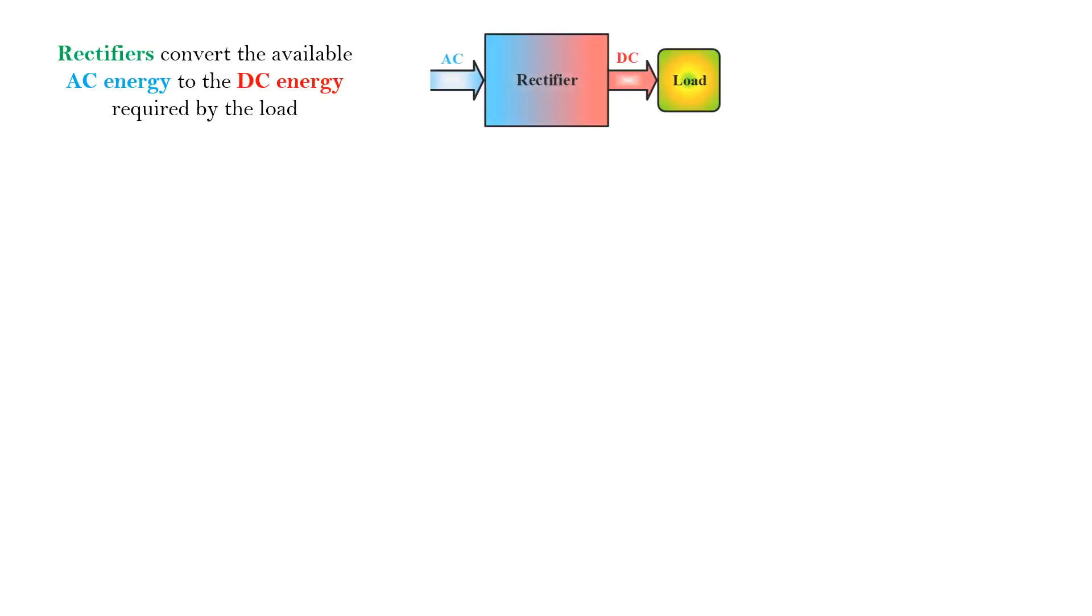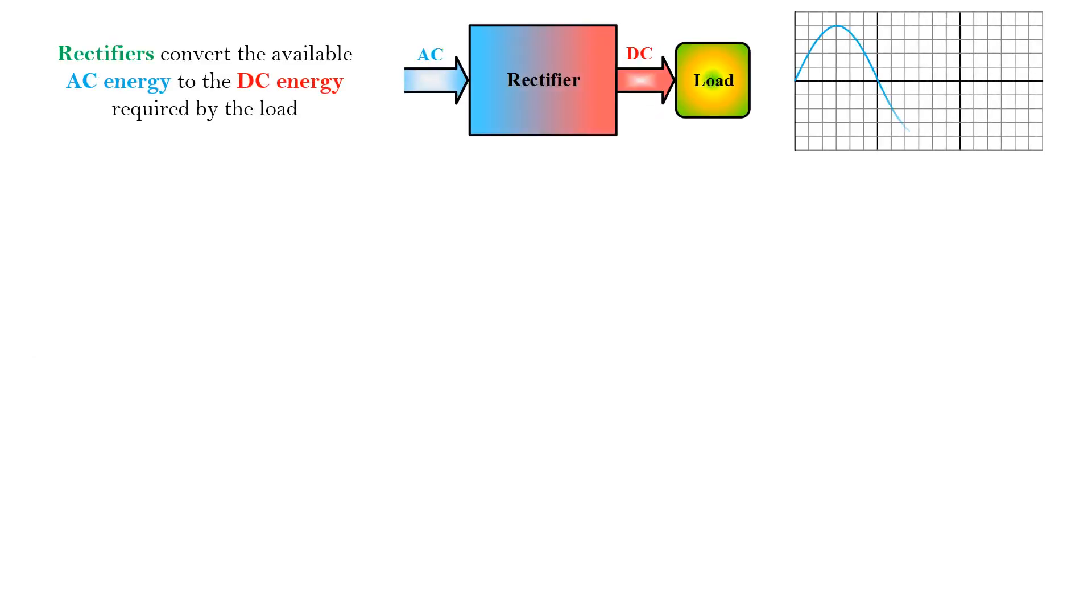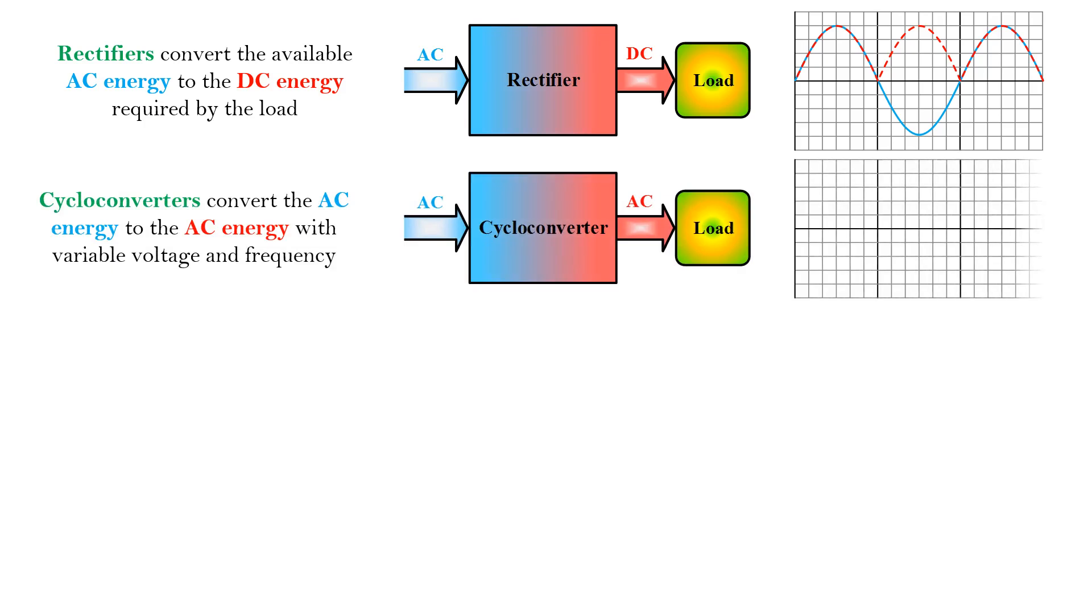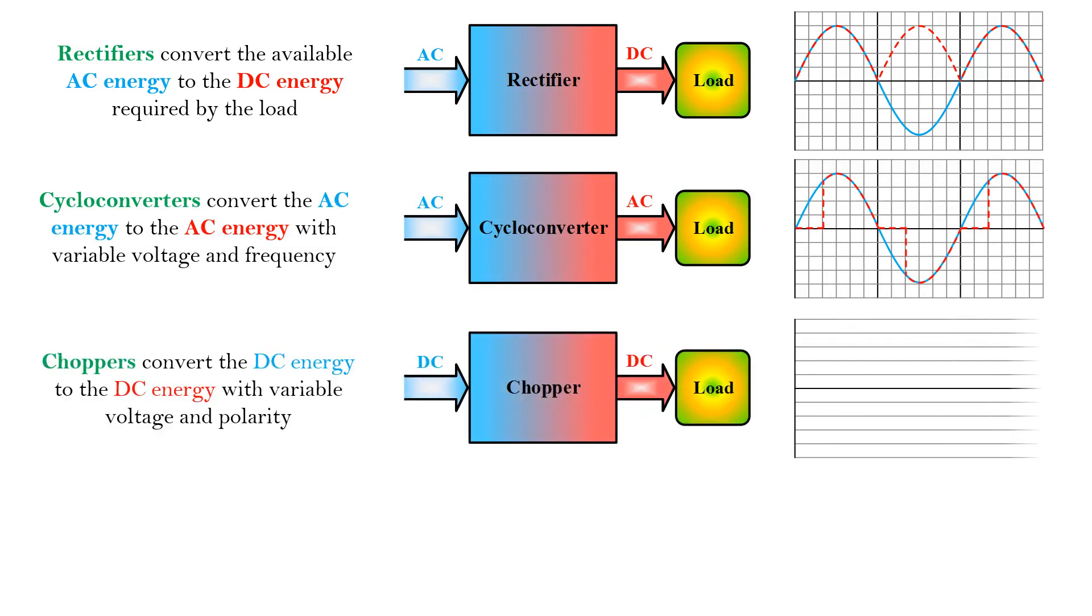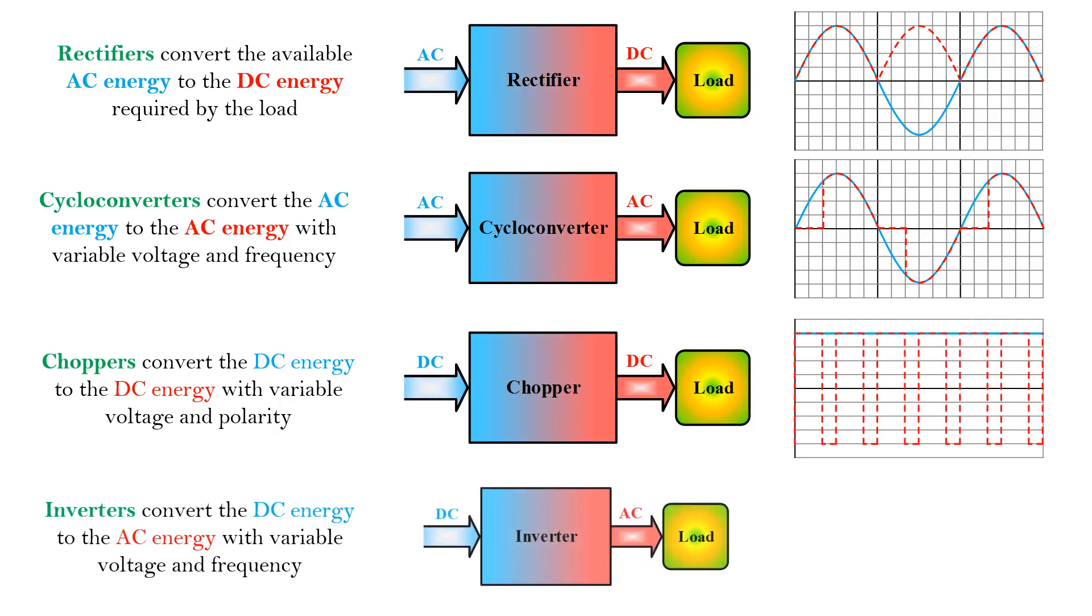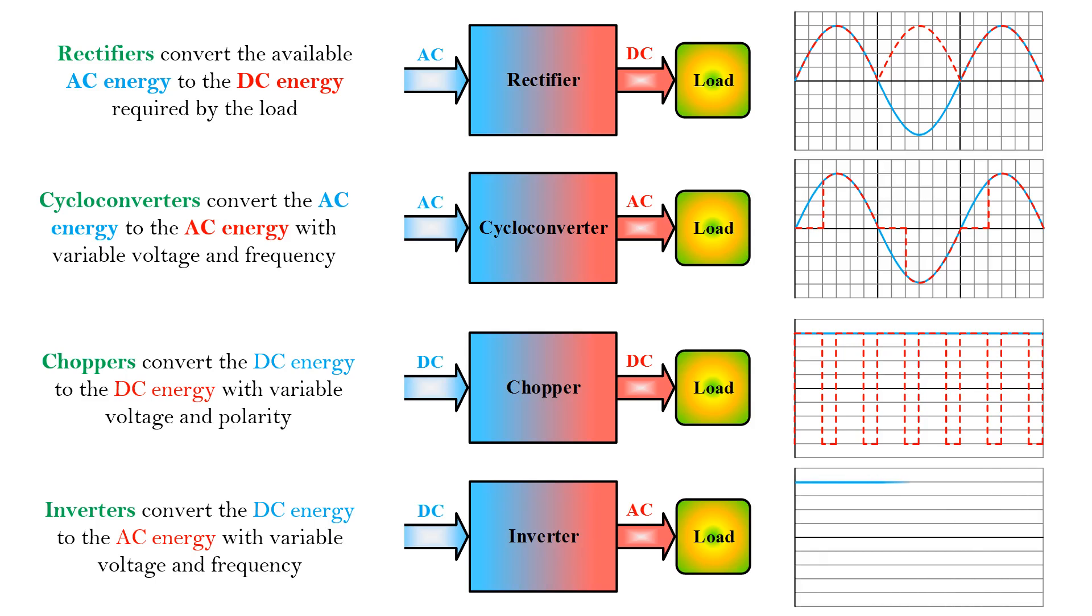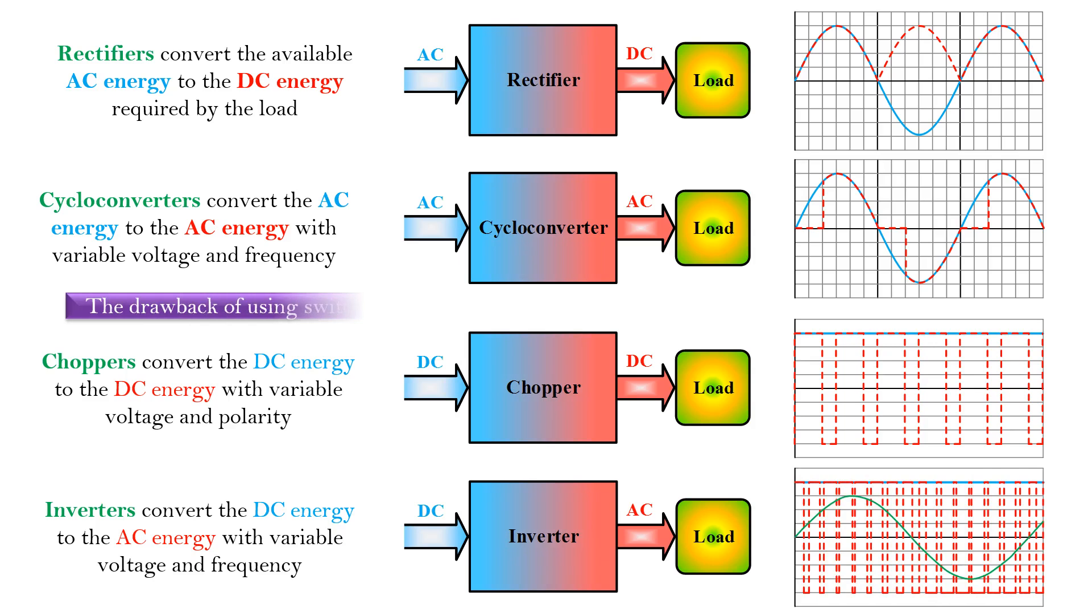Rectifiers convert the available AC energy to the DC energy required by the load. Cycloconverters convert the AC energy to the AC energy with variable voltage and frequency. Choppers convert the DC energy to the DC energy with variable voltage and polarity. Inverters convert the DC energy to the AC energy with variable voltage and frequency. The drawback of using switches is the appearance of harmonics.